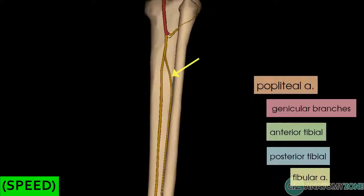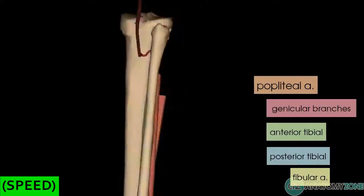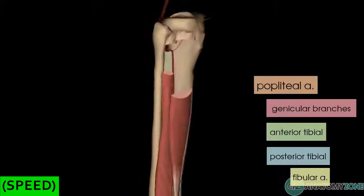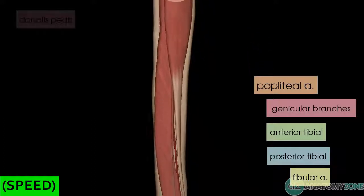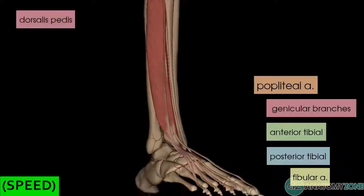The other branch of the popliteal artery is the anterior tibial artery. The anterior tibial artery passes into the anterior compartment of the leg through a gap in the interosseous membrane between the tibia and the fibula. It then descends down the leg, and at the foot the anterior tibial artery becomes the dorsalis pedis artery.